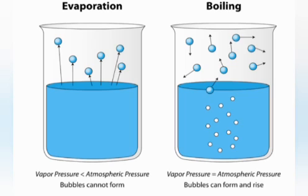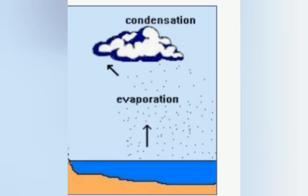The next process is condensation. The process during which a substance in its vapor or gaseous state on cooling changes into its liquid state at a particular temperature is called condensation.